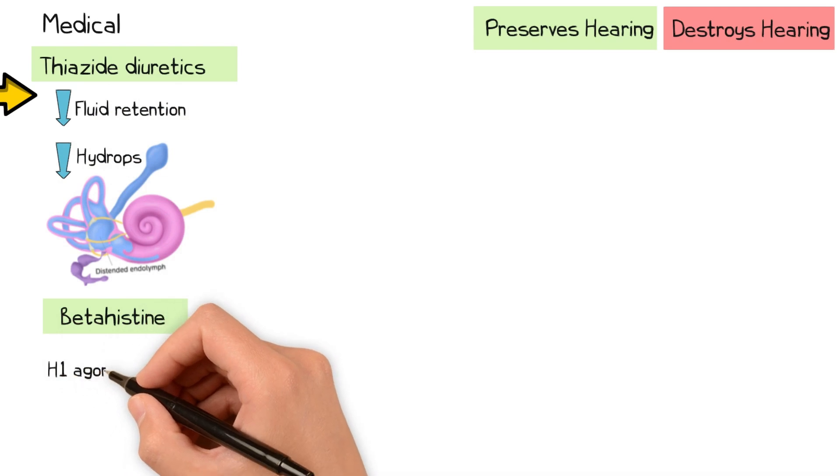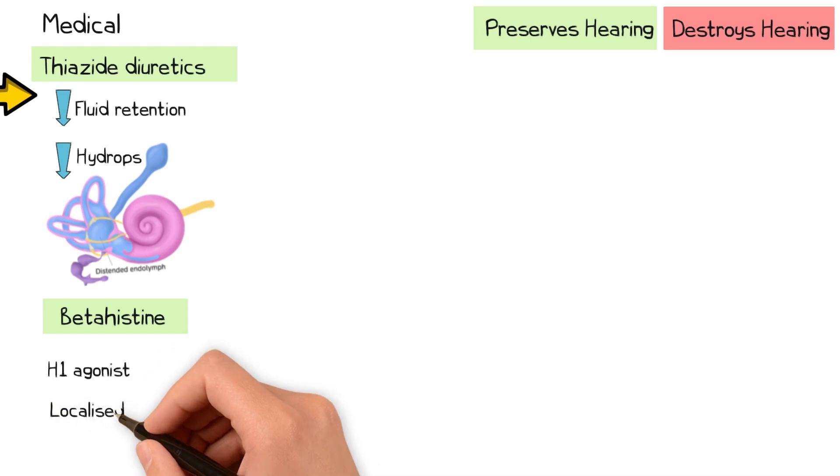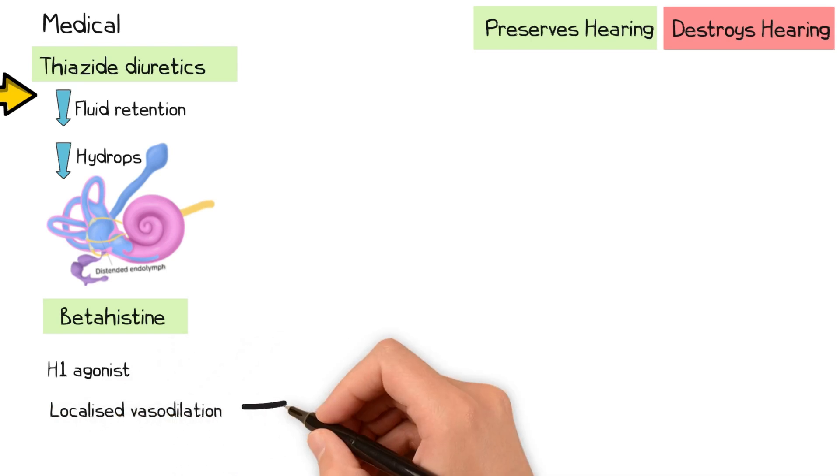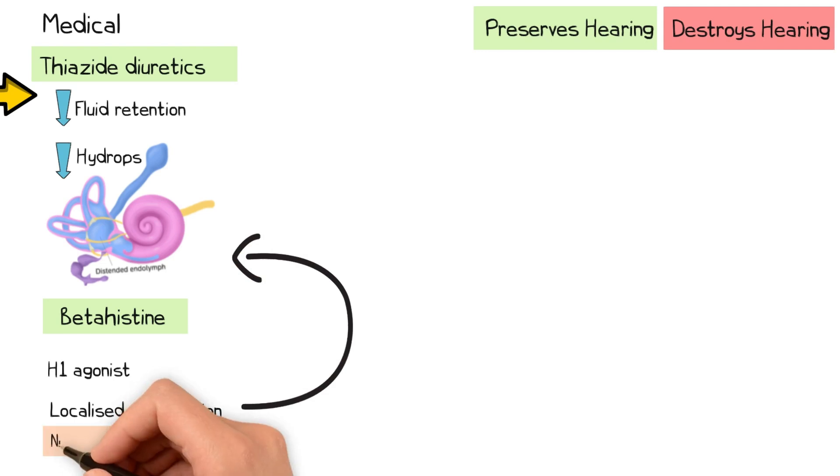Betahistine is a histamine agonist on the H1 receptor, which are located in the inner ear blood vessels. This results in localised vasodilation, which is thought to improve hydrops. Although it's often prescribed for many years, double-blind randomised controlled trials have not demonstrated a significant improvement in symptom control compared to placebo.